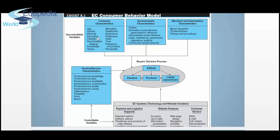Then you have the buyer's decision process — this is the main cycle. The buyer's attitude, intention, purchase, and loyalty all constitute the buyer's decision process. What attitude they came to your store with, their intentions, what they want to get, the purchase, and then post-purchase behavior — how loyal they are. Would they come back? If they come back, that means you are a successful business. If they keep coming to you, you have just made a loyal customer.